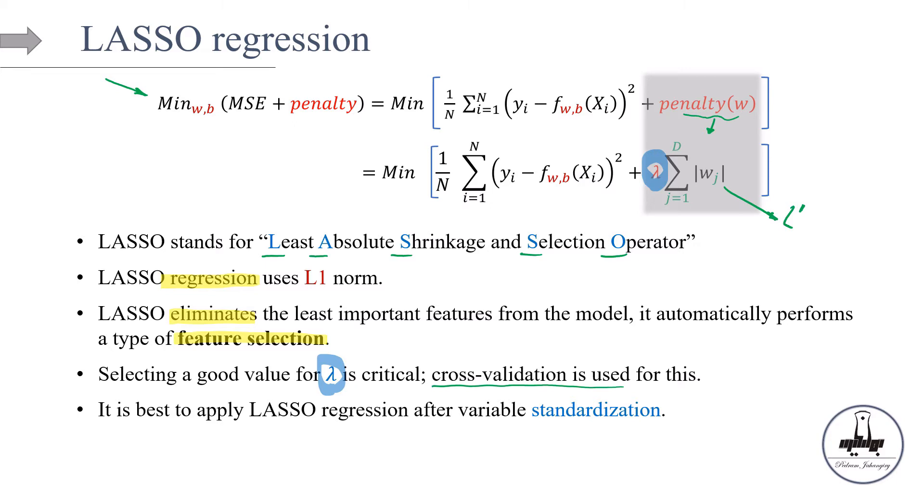Like any other penalized regression models, we need to standardize the features before training the model. Why? Because the penalty term here is something like the summation of absolute values of weights. And it is important for us to compare, well, these weights that we are adding are comparable to each other. It's going to help the algorithm a lot to find the, to be, firstly, to be faster and smoother.